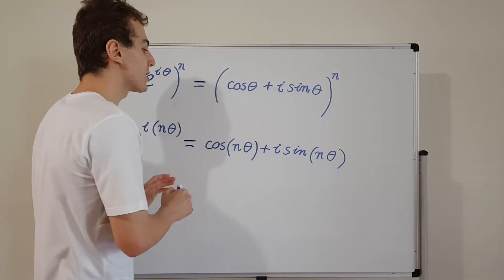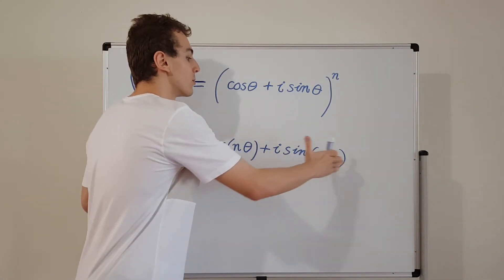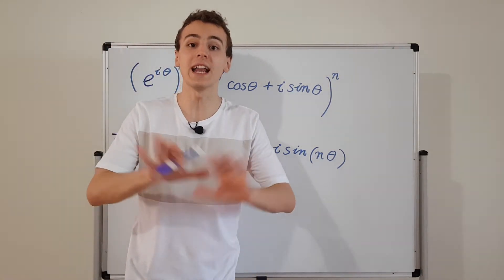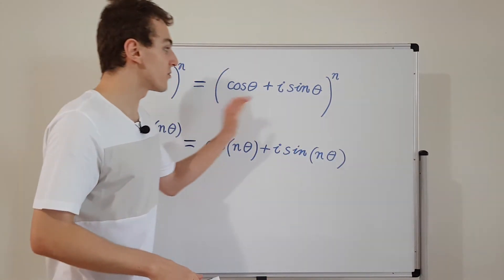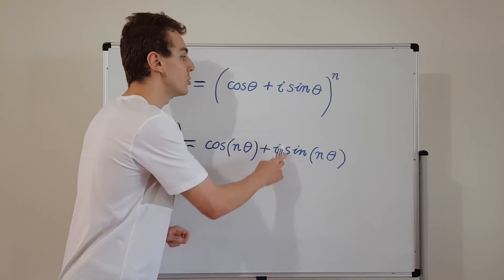If you include that in as a factor, you will actually get de Moivre's theorem. And that de Moivre's theorem actually works for any complex number. But this is just for complex numbers that live on the unit circle.